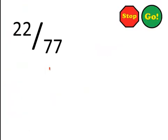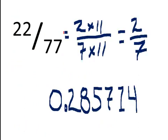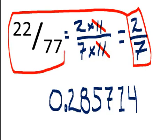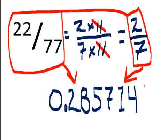Give it a whirl. Well, it turns out 22 can be factored as 2 times 11 and 77 can be factored as 7 times 11. This 11 cancels with that 11, leaving us with 2 sevenths. These are equivalent fractions, and if we did the long division on each of them, we would get the same decimal answer — residing at the same place on the number line.